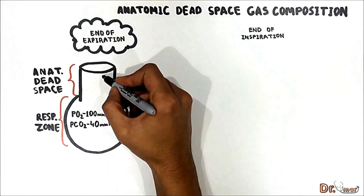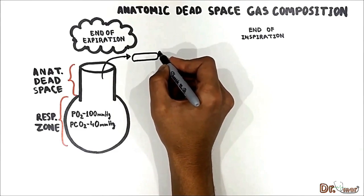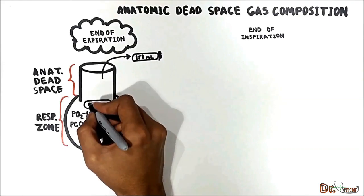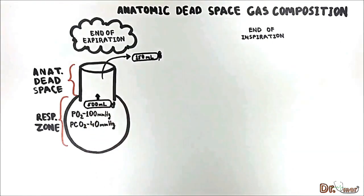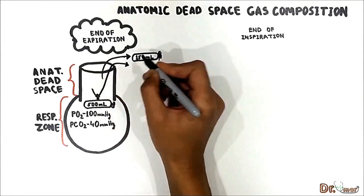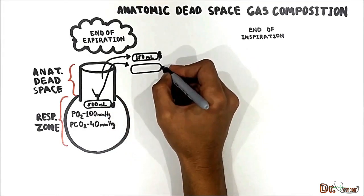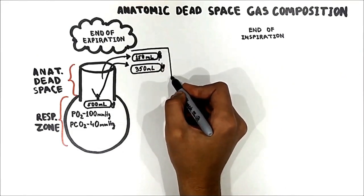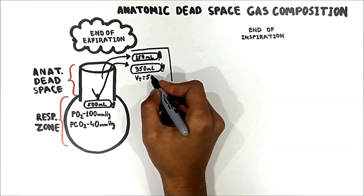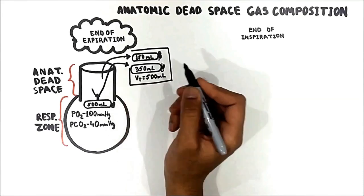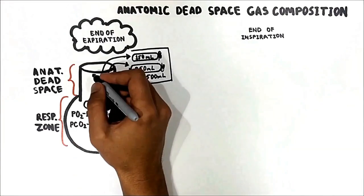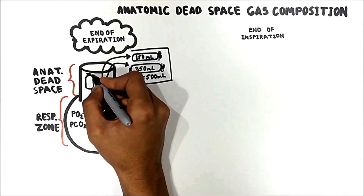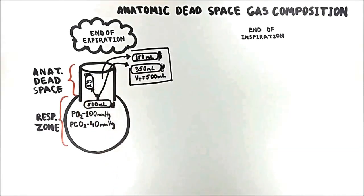When a person breathes out, the first 150 milliliters of air come out from the anatomic dead space. The respiratory zone pushes out 500 milliliters, but it divides into two parts: the first 350 milliliters will be expired out. These 350 milliliters plus the previous 150 milliliters compose the tidal volume of 500 milliliters. The remaining 150 milliliters of air from the respiratory zone stays in the conducting zone — the anatomic dead space.